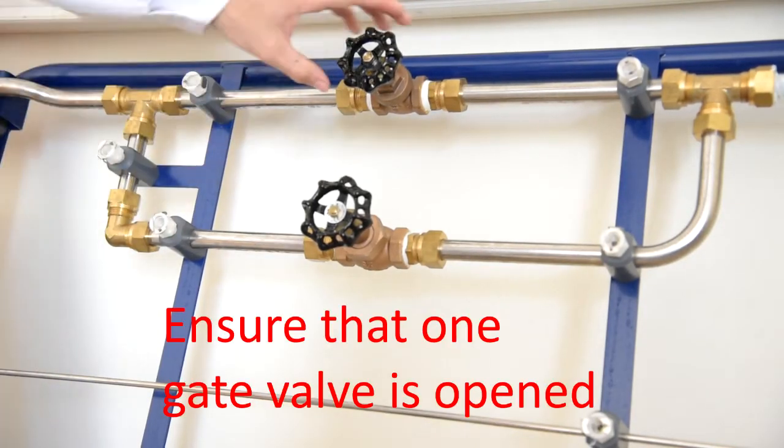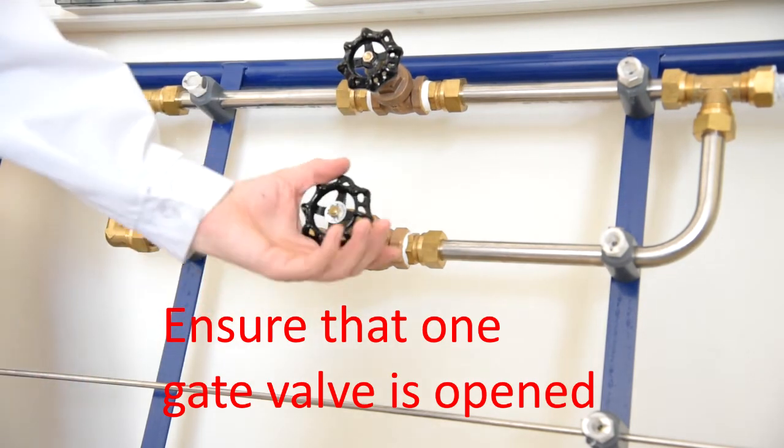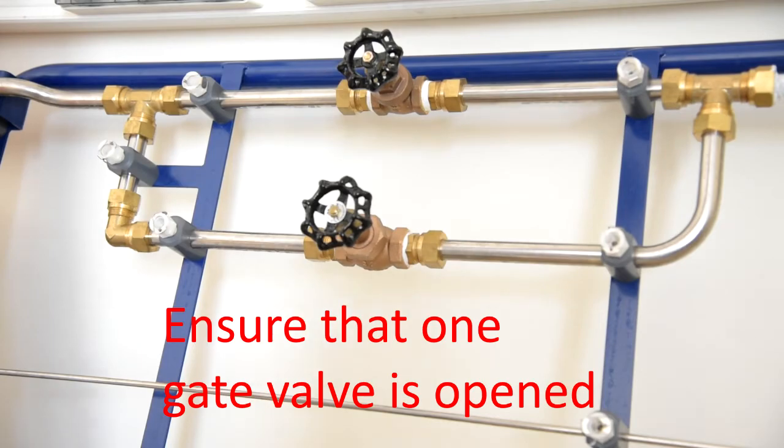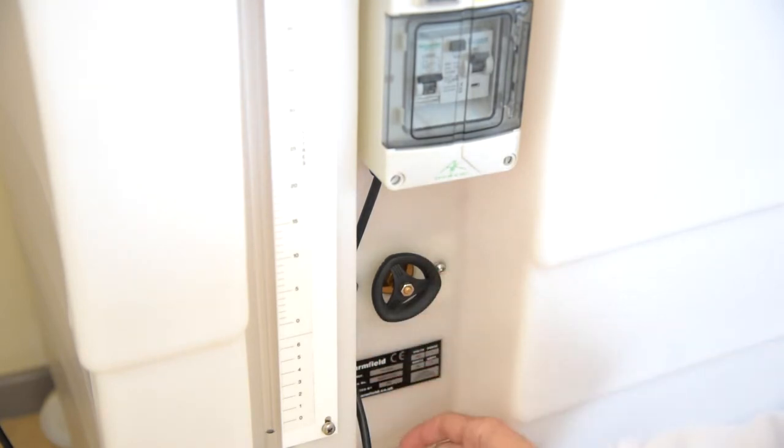Then, just check that this gate valve is open too, and this valve is closed. So, after checking all positions of valves, wires, and gates, you have to start the hydraulics machine.